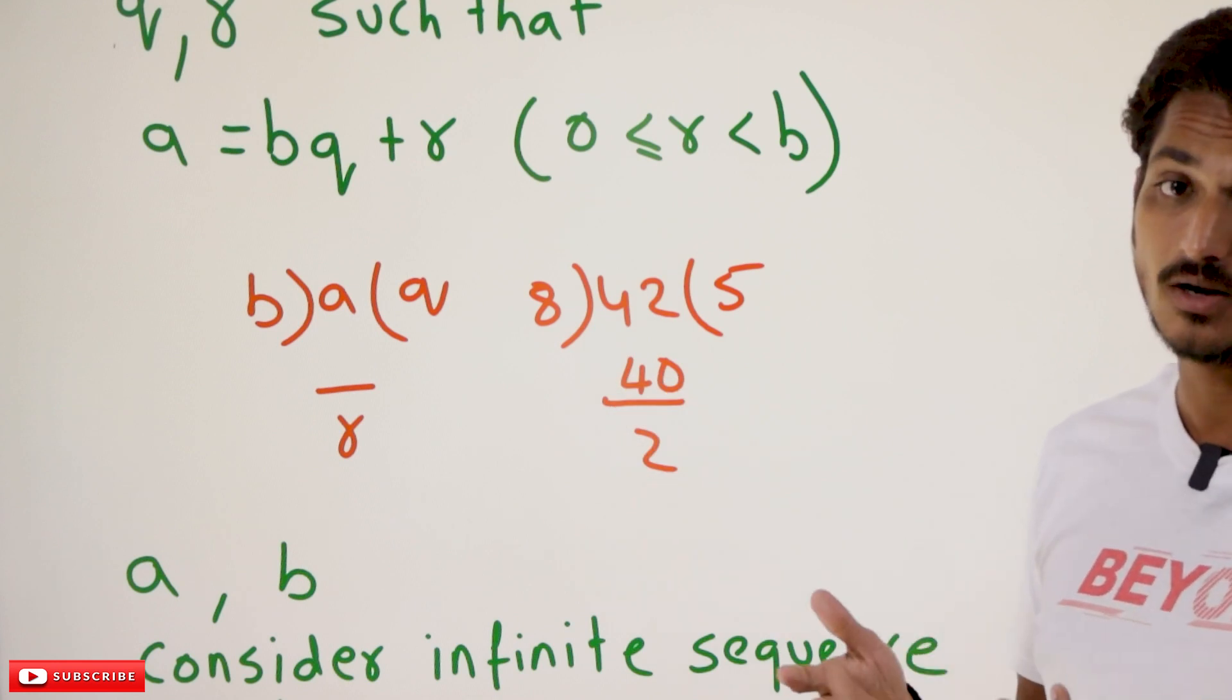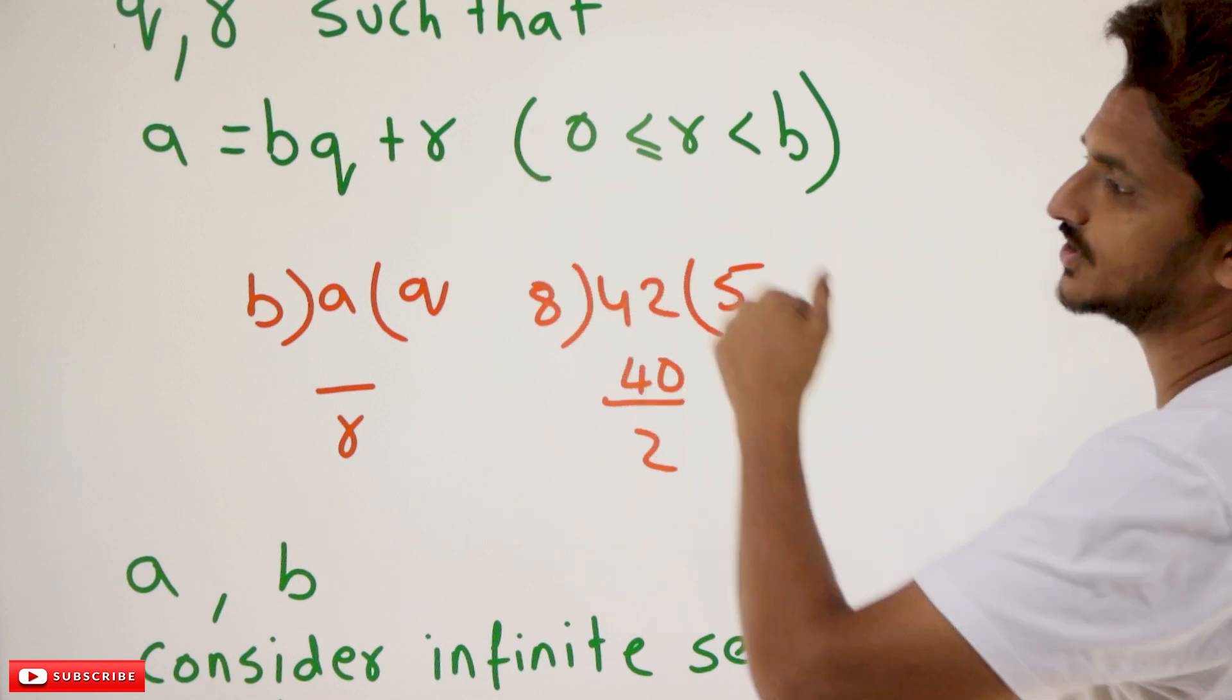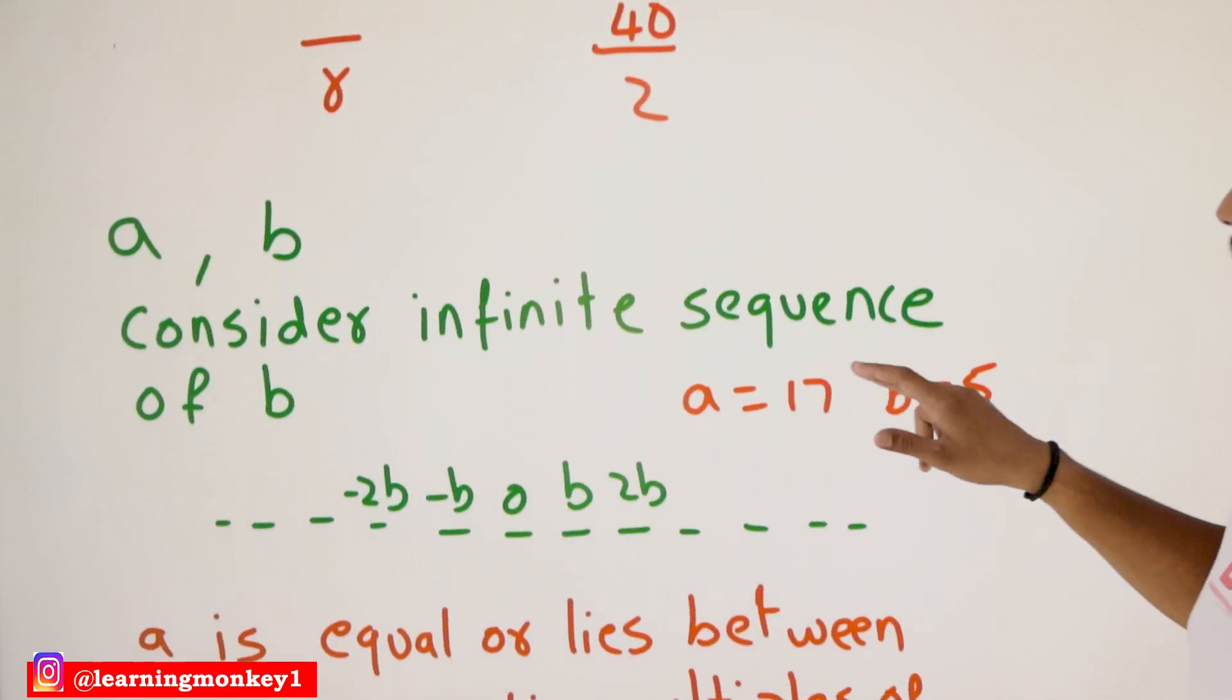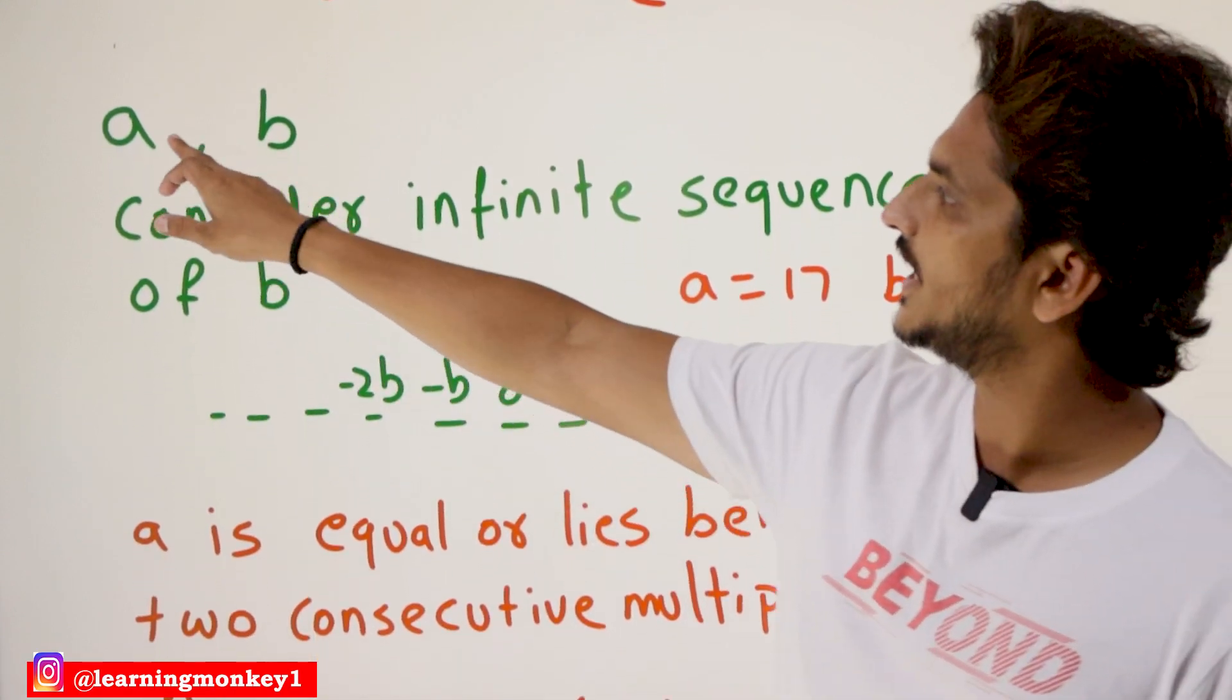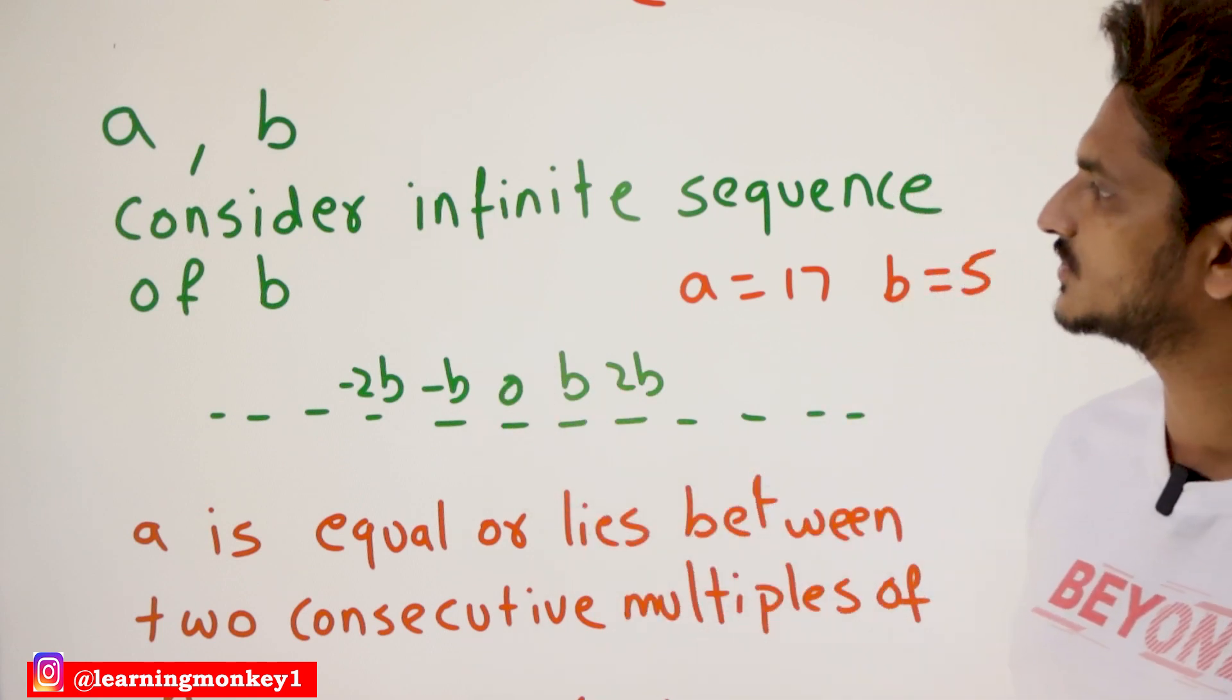So coming to the mathematical proof, why this condition satisfies, let's take some intuition. A comma B, these are the integers which we consider.